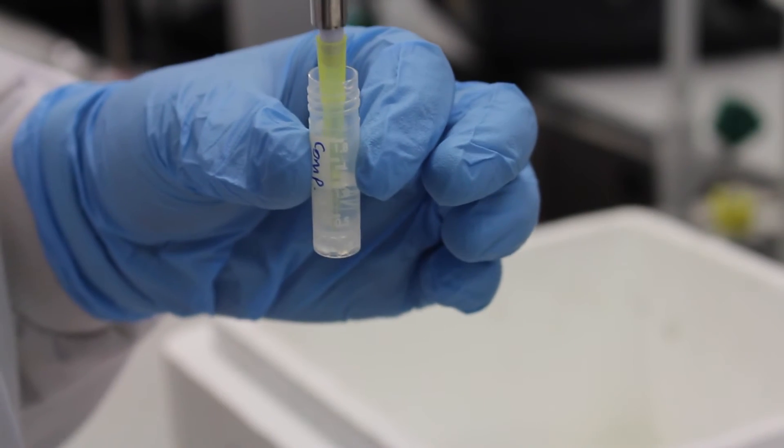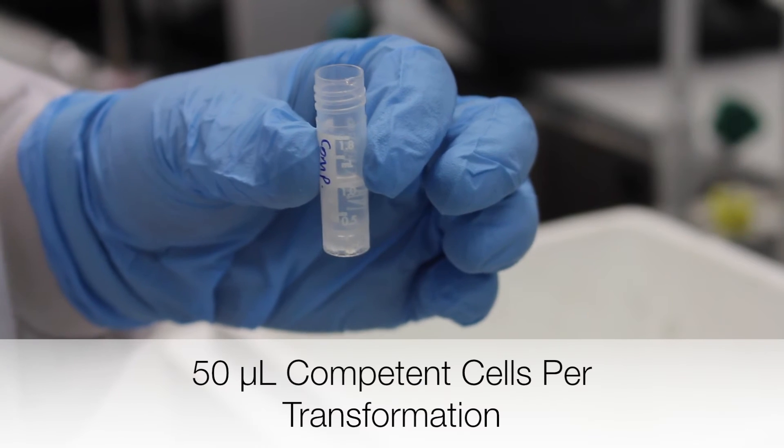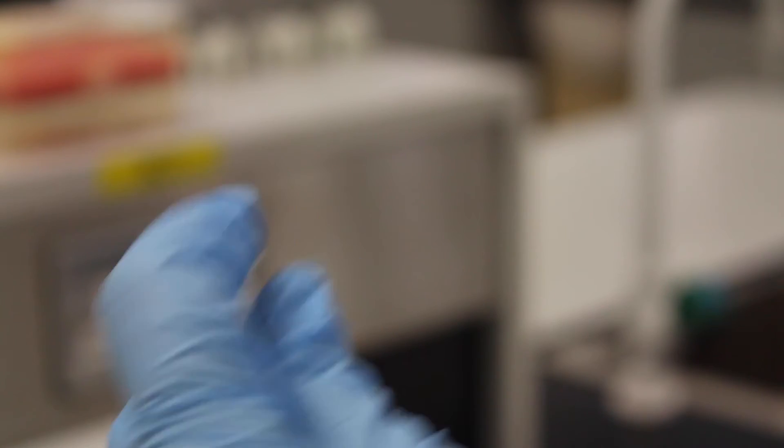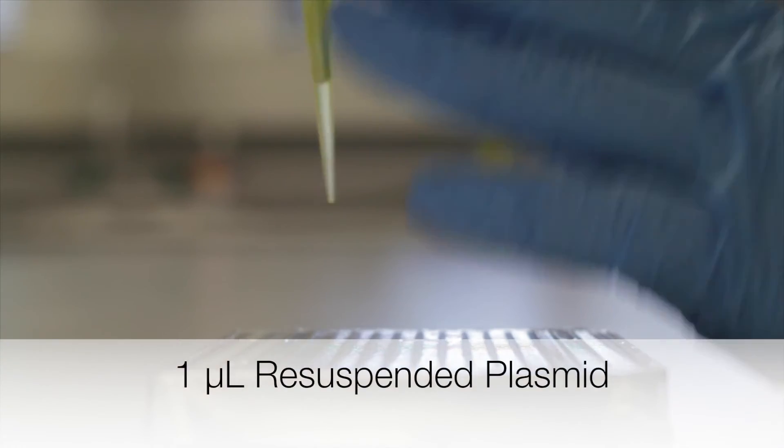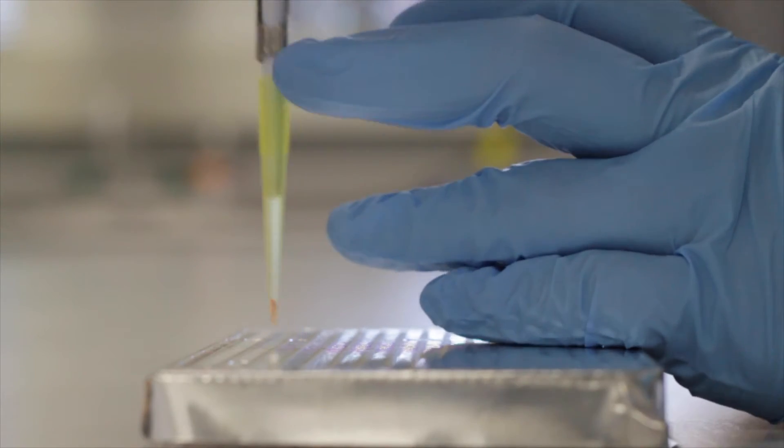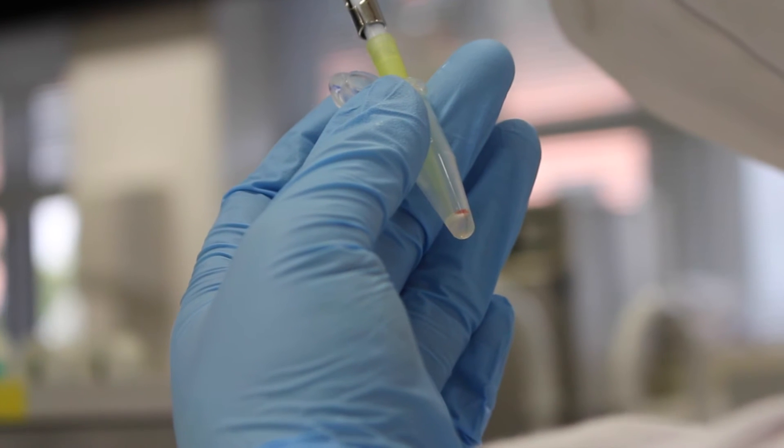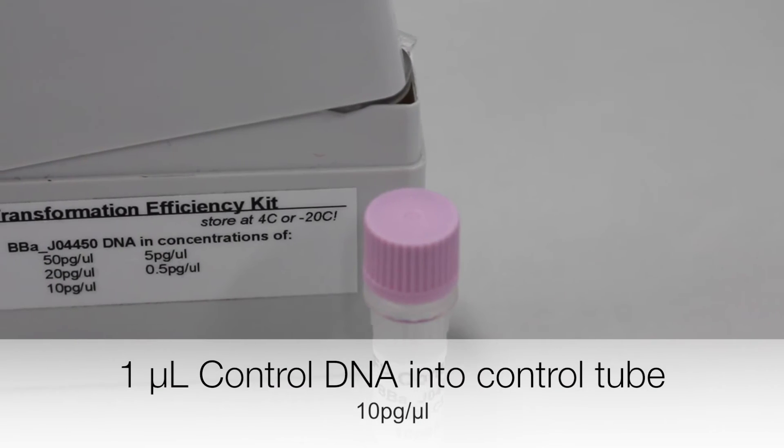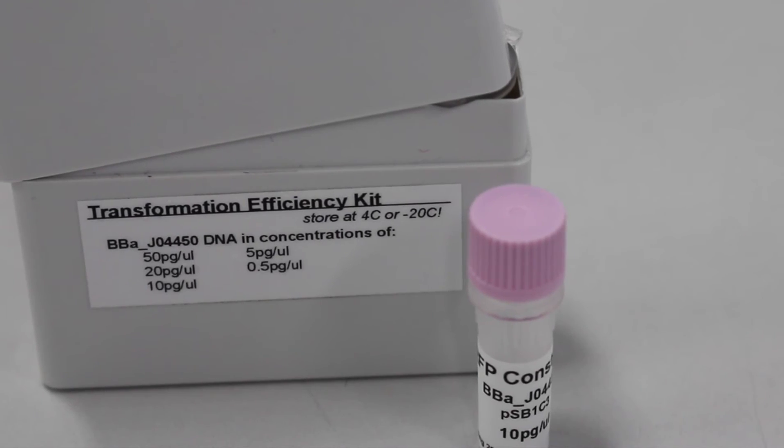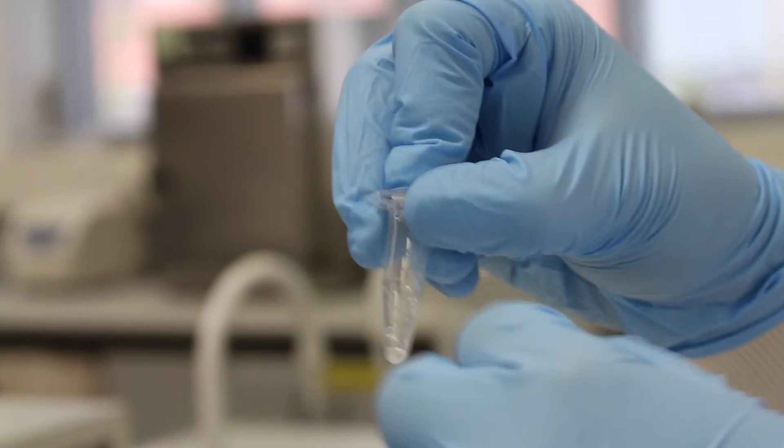Once thawed, 50 microliters of competent cells per transformation is added to pre-chilled 2 milliliter Eppendorf tubes. The tubes are put back on ice. One microliter of the resuspended plasmid is added to each tube. One microliter of control DNA is now added into your control transformation tubes. The tubes are flicked gently to mix the contents.